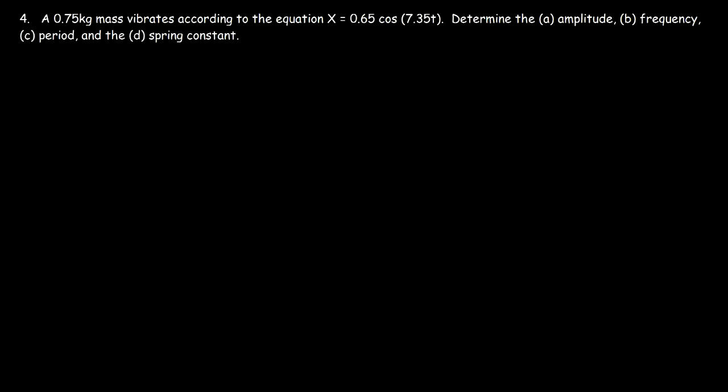Now let's work on this problem. A 0.75 kilogram mass vibrates according to the equation x equals 0.65 cosine of 7.35t. Determine the amplitude, frequency, period, and the spring constant. Here, x represents the position of the oscillator.